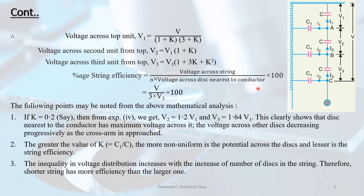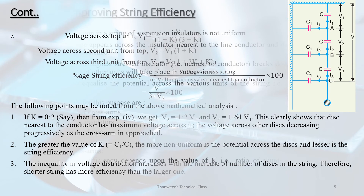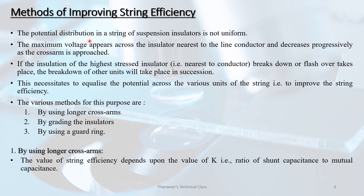The lesser the value of K (ratio of shunt capacitance to self-capacitance), the more uniform is the potential distribution across the disks and the greater is the string efficiency. The inequality in voltage distribution increases with increased number of disks in the string, so a shorter string has more efficiency than a longer one.